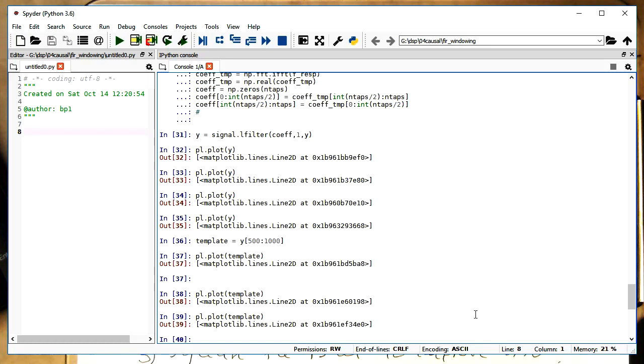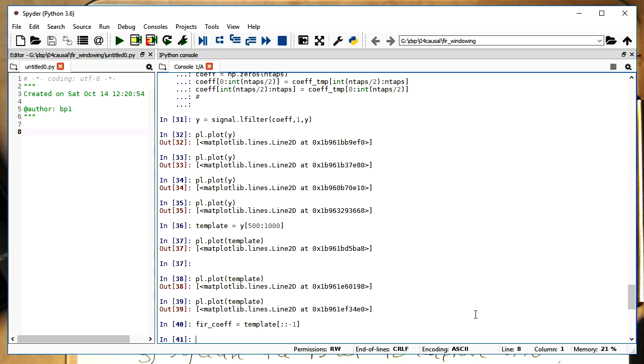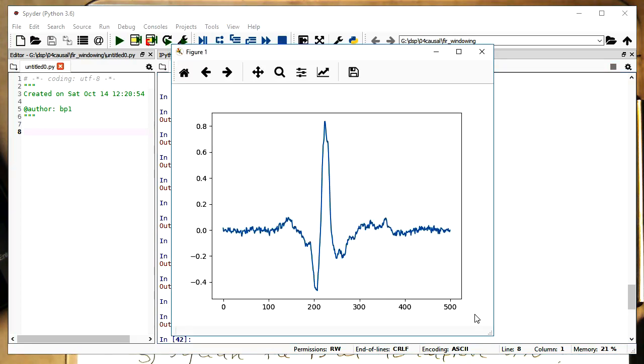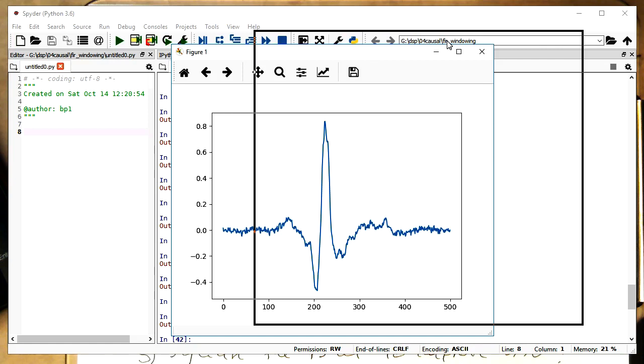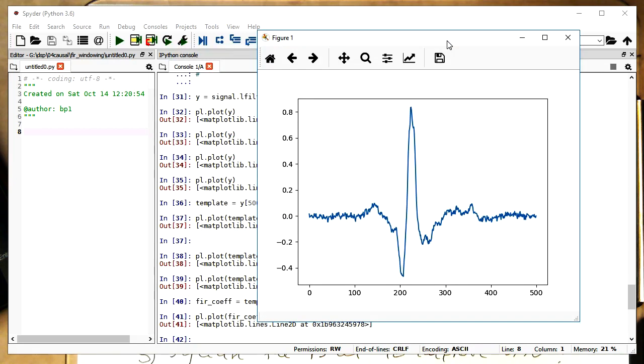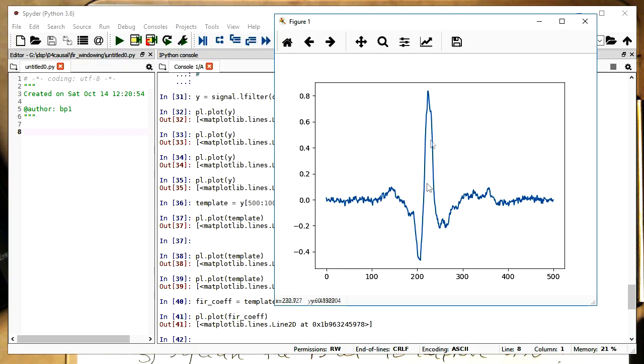So now we need to create our FIR coefficients by time reversing it. And so that's with the splicing operations, also very easy. So let's call this here then matched FIR. Let's call this FIR coefficients here. Template. And we just create our reversed version of this. Plot FIR. So that's now our time reversed version of the previous one, of the template here.